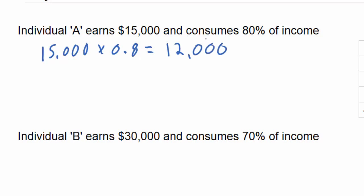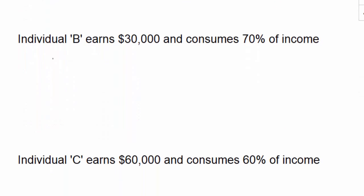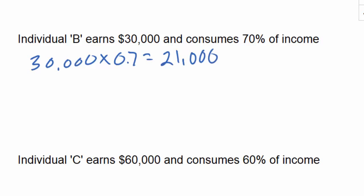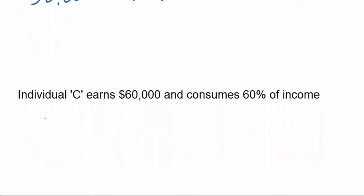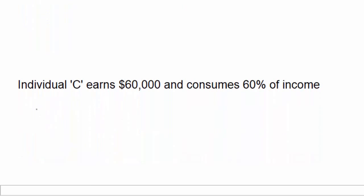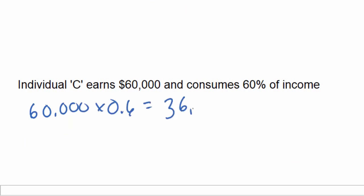Individual B earns $30,000 and 70% is spent on goods and services. Multiplying $30,000 by 0.7, Individual B consumes $21,000 worth of goods and services per year. Individual C, on the other hand, consumes 60% of her income, so $60,000 times 0.6. Individual C consumes $36,000 worth of goods and services per year.